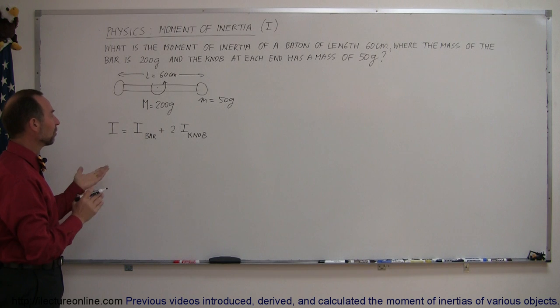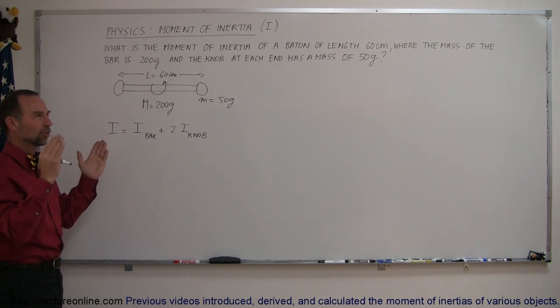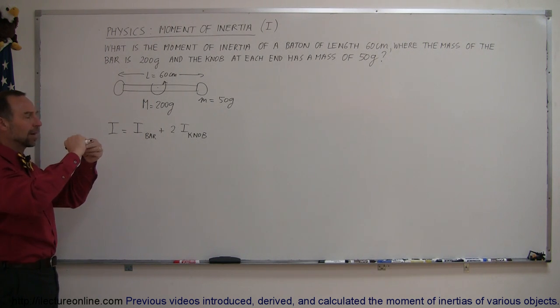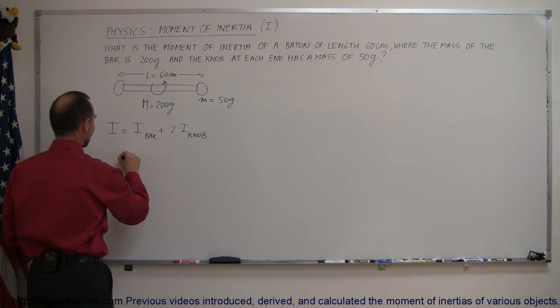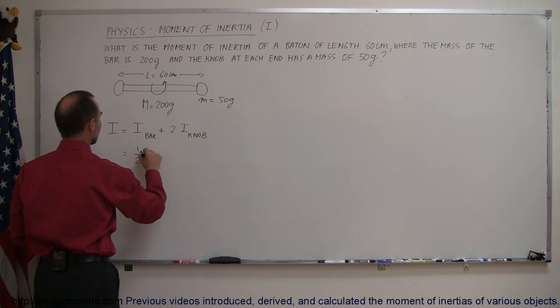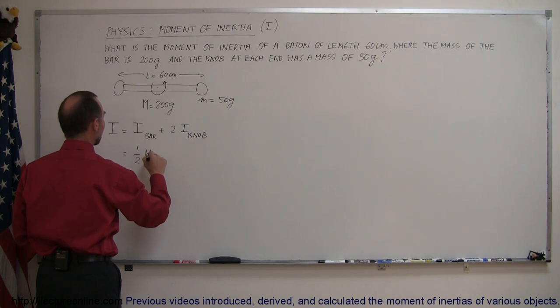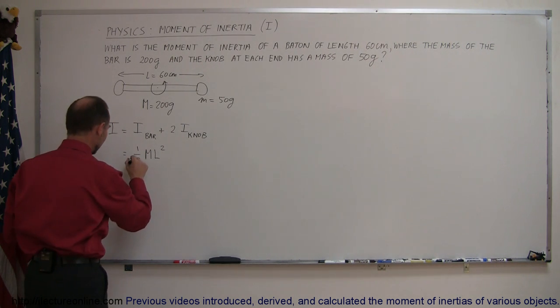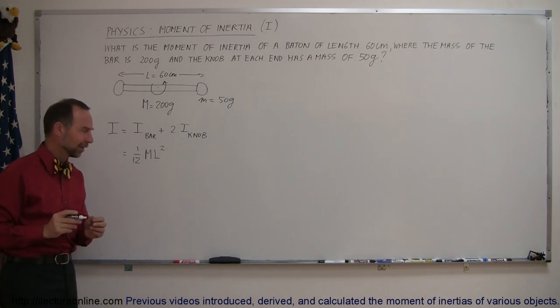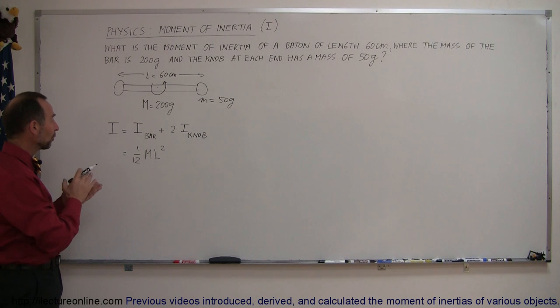All right now what is the moment of inertia of the bar? Well it's a solid bar that's rotating about its central point so the moment of inertia is 1/12th the mass of the bar, so I'll call that M times the length of the bar l squared. I wrote one half and I meant 1/12th. So 1/12th the mass times the length of the bar squared.